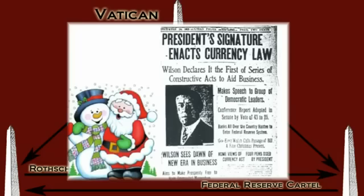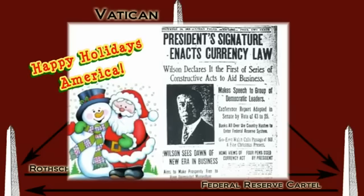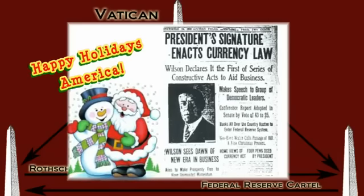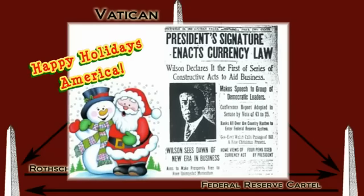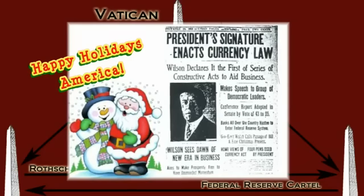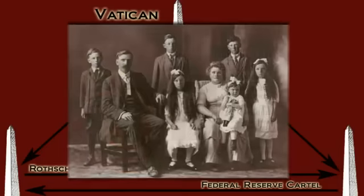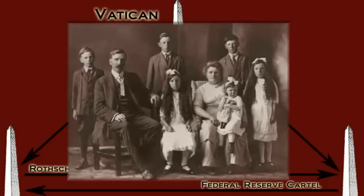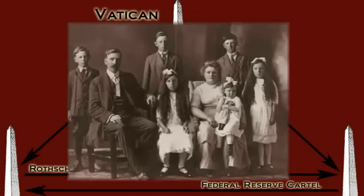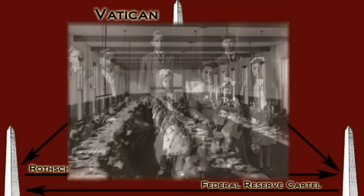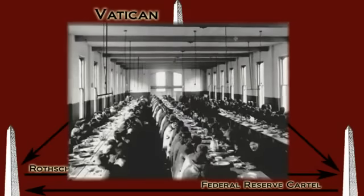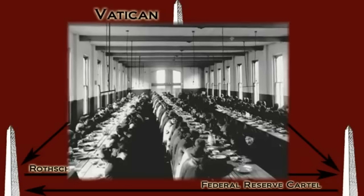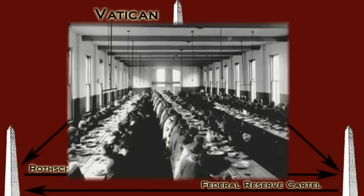Two days before Christmas, while the majority of Congress was away for the holidays, the Federal Reserve Act was voted in and President Wilson signed it into law. The public was told that the Federal Reserve System would give them financial stability and that inflation and economic crises would become a thing of the past. As history has shown, nothing could be further from the truth.